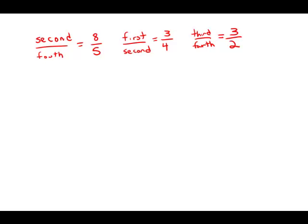At a certain school, the ratio of the number of second graders to the number of fourth graders is 8 to 5, and the ratio of the number of first graders to the number of second graders is 3 to 4. If the ratio of the number of third graders to the number of fourth graders is 3 to 2, what is the ratio of the number of first graders to the number of third graders?